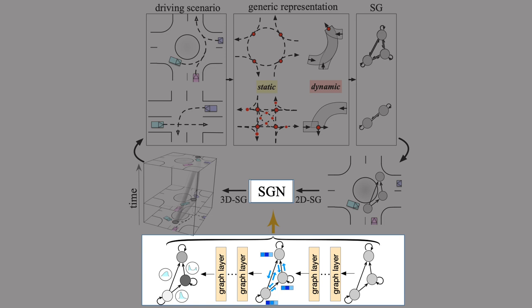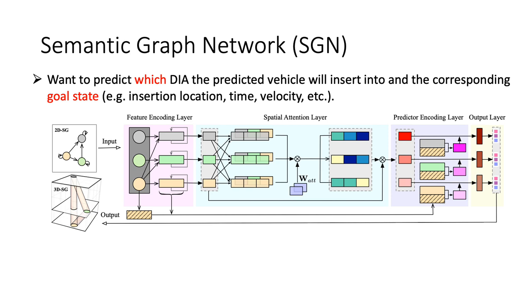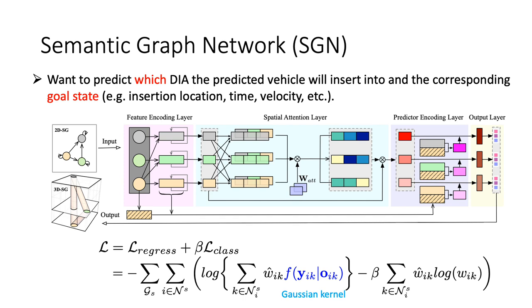Finally, we get into the semantic graph network structure. And here is the overall network structure. Basically, given a two-dimensional semantic graph, the network will output a set of three-dimensional semantic graphs, which contain the information of which DIA the predicted vehicle will insert into and the corresponding goal state. The loss function includes a classification term as well as a regression term for our prediction problem.